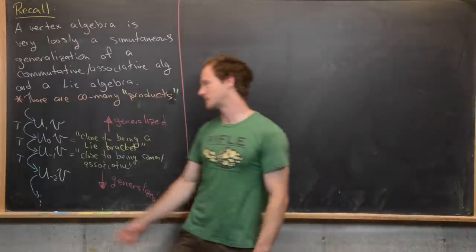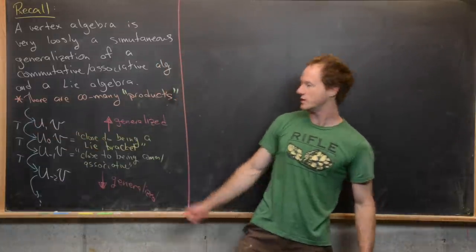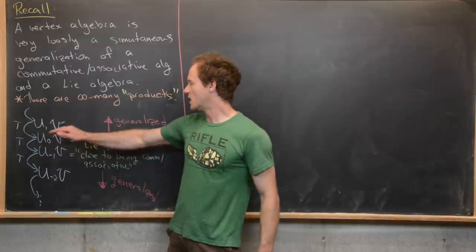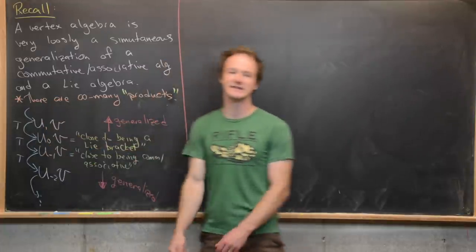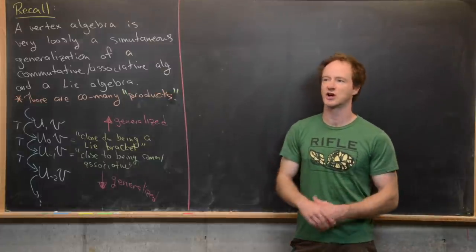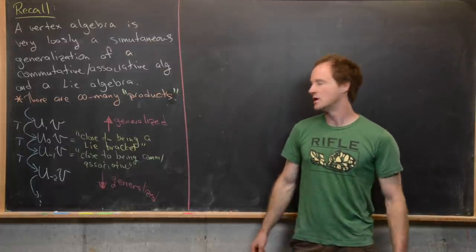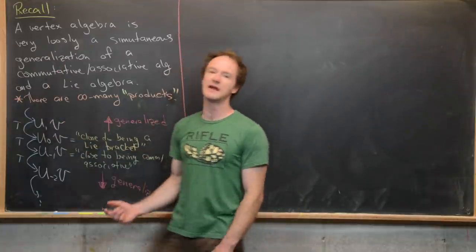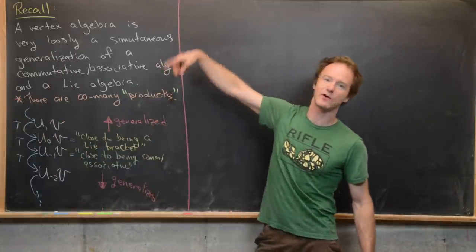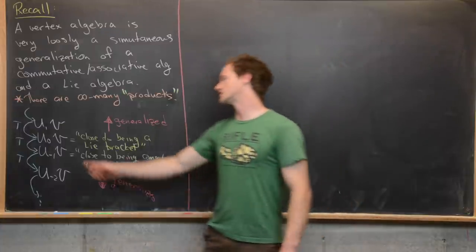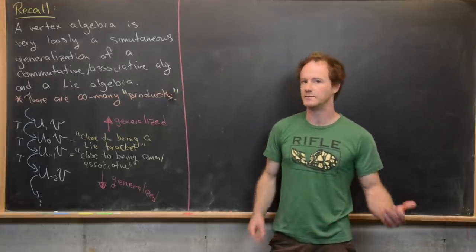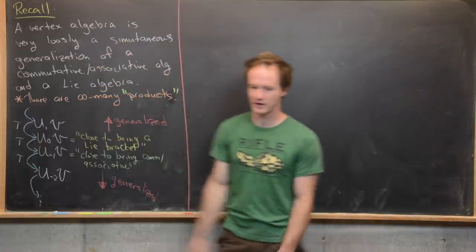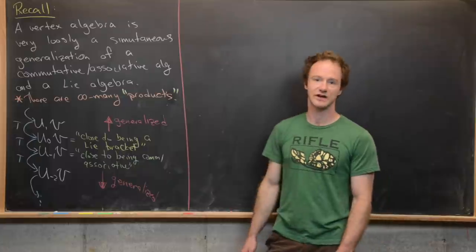Then furthermore there's this special map t called the translation operator which takes you down kind of deeper into the algebra. So you can think of like up here being the top of the algebra and this t is taking you deeper into it. There's this thing called the truncation condition which I'm not going to go into really carefully right now but we'll see it later. And that says that at some point up here you'll reach the top and it'll be zeros after that. So in other words there is some n so that uₙv is equal to zero for all n bigger than n or whatever. So that's the top and then the t translation operator takes you deeper and deeper and deeper into this object.